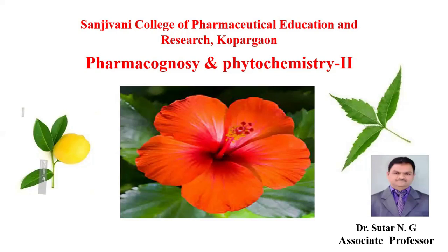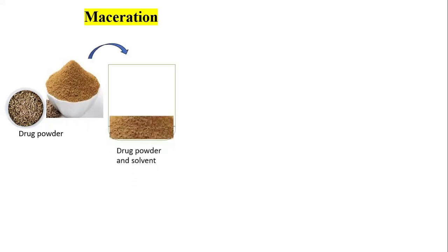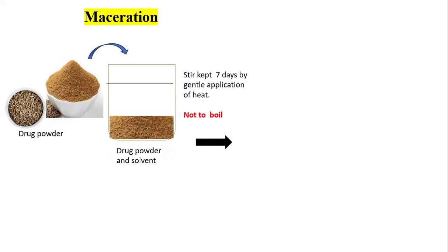First we see maceration. Maceration is similar to infusion but with a slight difference. In this case, the drug material is converted into a coarse powder form — not a fine powder, but coarse powder. That powder material is added into a beaker, and in this beaker we add water or a solvent — mostly alcohol — for the maceration purpose. You can also use water as a suitable solvent. Stir it and keep it for seven days with gentle application of heat, just enough to increase the penetration power of the solvent into the material.